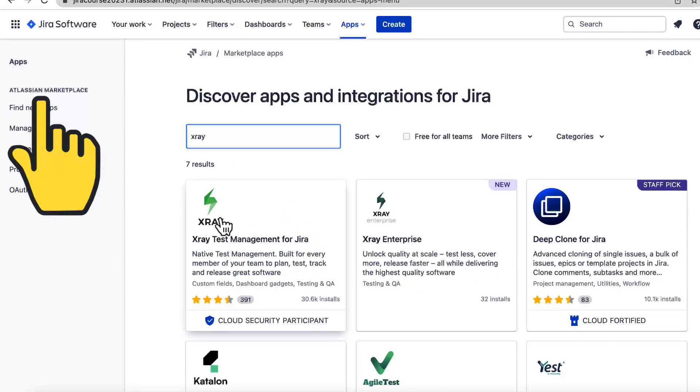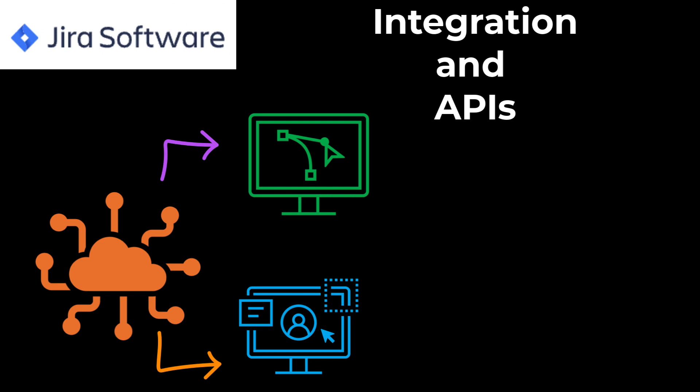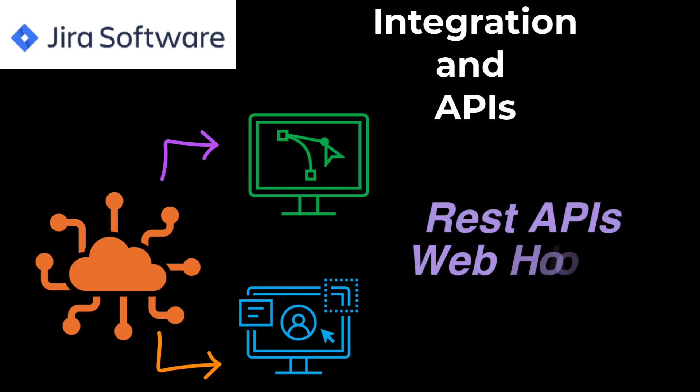The last feature I want to talk about is integration and APIs. Jira also provides APIs and supports integration with other applications and systems, enabling seamless data exchange and automation. It offers REST APIs, webhooks, and integration with popular development and collaboration tools. For example, one can use Jira's REST API for fetching information about a specific issue using Python scripts.